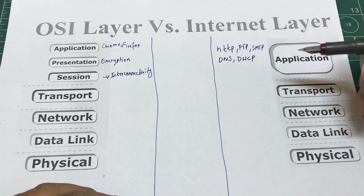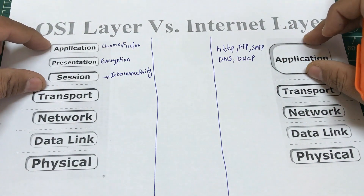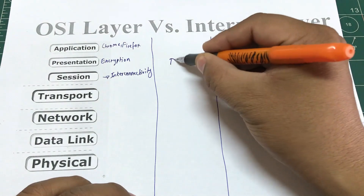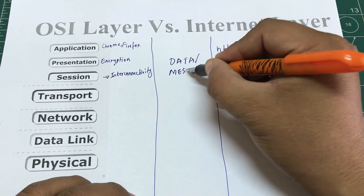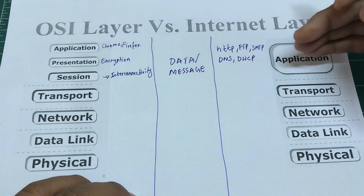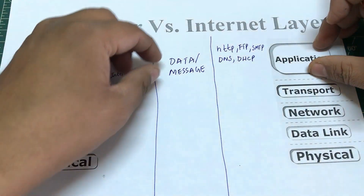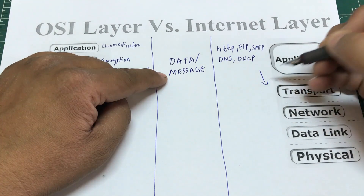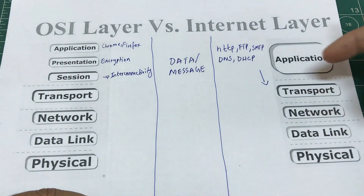At the application layer, the data — the website or service you want to access — is called a message. There is a particular name associated with every single layer. As data travels down the layers, each layer adds some type of information. When a message comes down to the transport layer, it gets a header added to it.